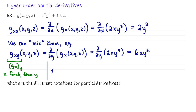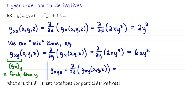We can do higher-order derivatives in the same way. Let me do g sub xyz. That would be: take g sub xy and now differentiate it with respect to z. So we're going to do d/dz of 6xy², which is zero.